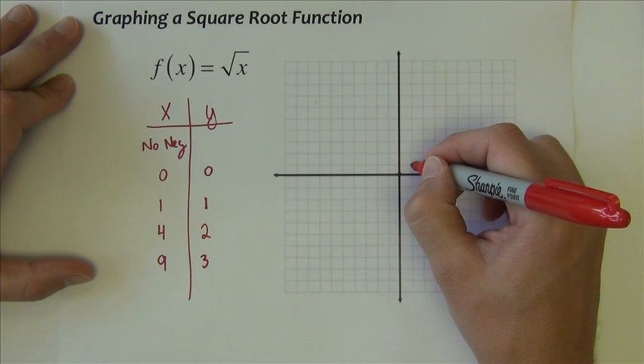If we plot those points, 0, 0, 1, 1, 4 square roots to 2, 9 square roots to 3, and there's our graph. It only goes that one direction. It doesn't come off into the negative side, because there are no negatives that we can square root. That's how we got the graph on the previous slide.